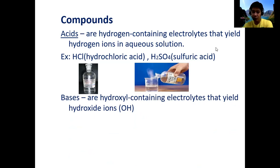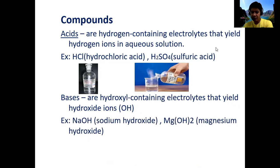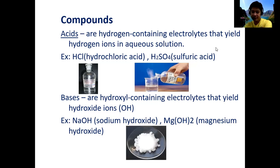Bases are the counterpart of acids — they are compounds that produce hydroxide ions (OH⁻) when dissolved in water, and they neutralize acids. Examples of bases are NaOH (sodium hydroxide) and Mg(OH)₂ (magnesium hydroxide). In chemical formulas for bases, they always contain OH, the hydroxide group. This is an example of sodium hydroxide pellets — they must be dissolved in water first to react.